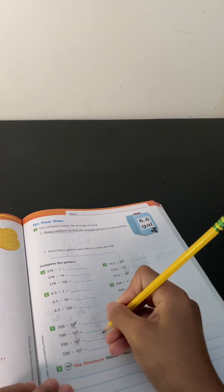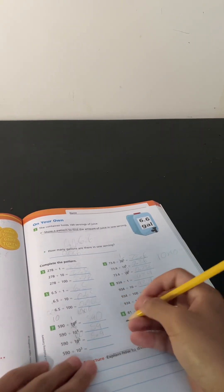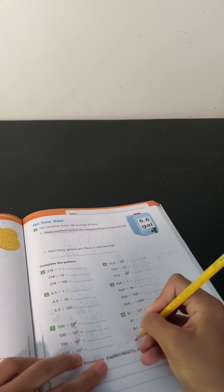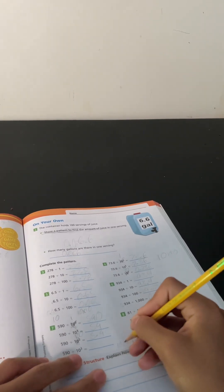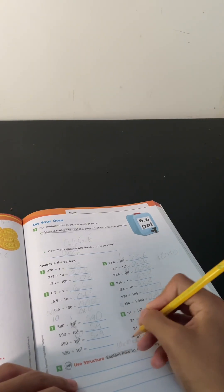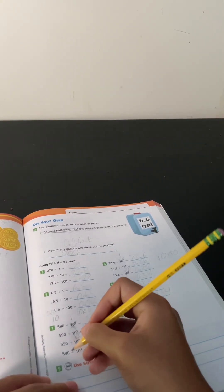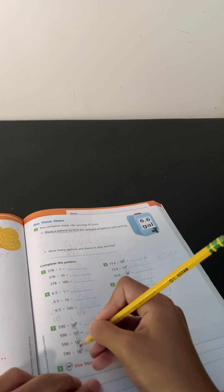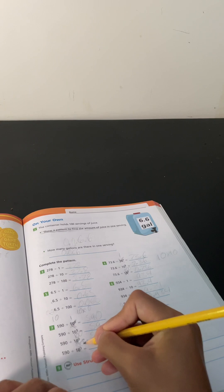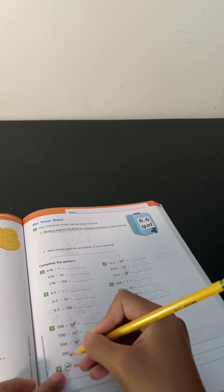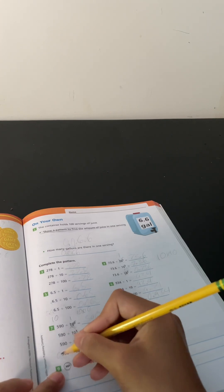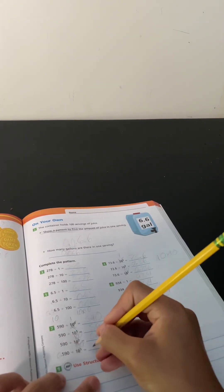10 to the power of 3 is 10 times 10 times 10, which equals 1000. 590 divided by 1000. There are three zeros, so move the decimal point three times: 0.590.